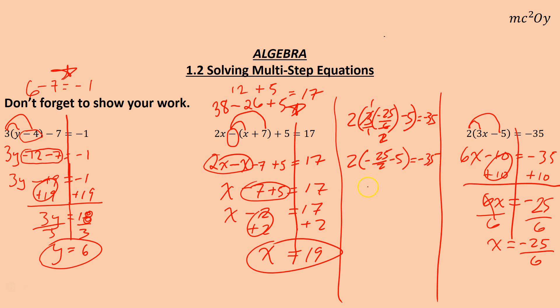Negative 25 halves. 25 divided by 2 is 12 and a half. So 2 times negative 12 and a half minus 5 equals negative 35, we're hoping. Negative 12 and a half, negative 5, that is negative 17.5. And 2 negative 17.5 is negative 35.